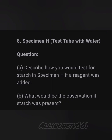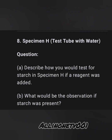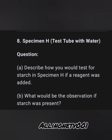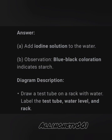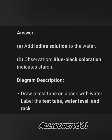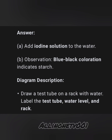Specimen H is a test tube with water. Possible question: describe how you will test for starch in specimen H using a different reagent, and what would be the observation if starch was present. Answer A: add iodine solution to the water. Answer B — observation: a blue-black coloration indicates the presence of starch. You may draw the diagram; note it's not always required to label it.